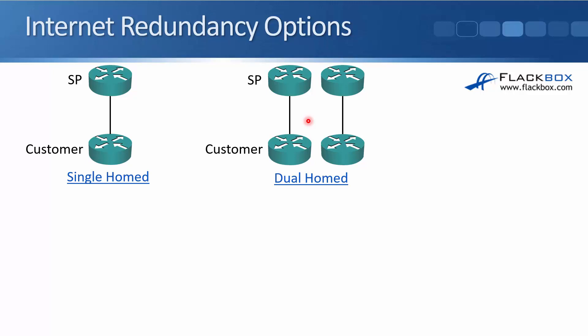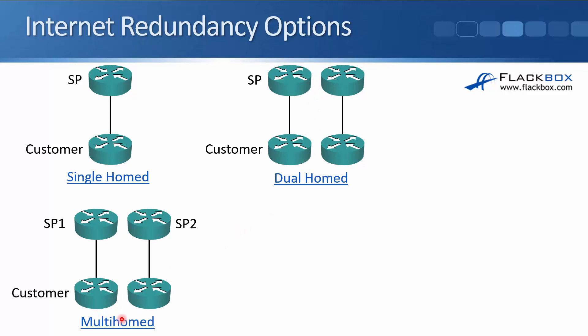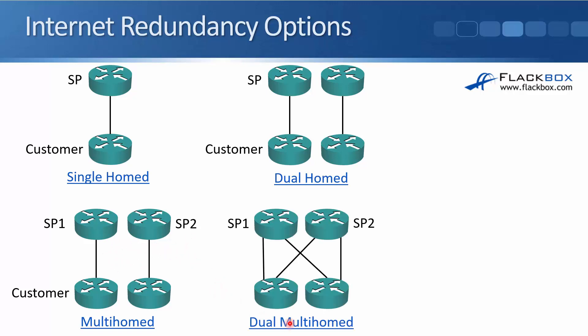It looks like there's no single point of failure with dual-homed, but there actually is one — what if the service provider has some kind of internal issue and loses their internet connectivity? Not very likely, but not unheard of. So if a customer is worried about that, they can use multi-homed, where the customer is connected to two different service providers. That removes that single point of failure. The last option is dual-multi-homed, where the customer is connected to two different service providers and their routers have multiple connections to each provider, giving the highest level of redundancy.